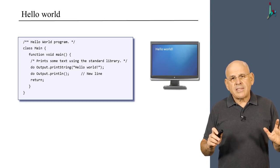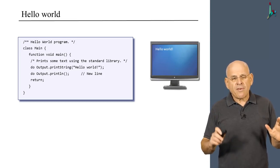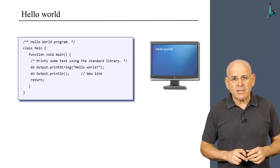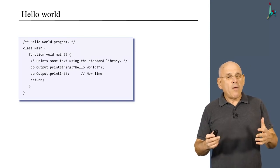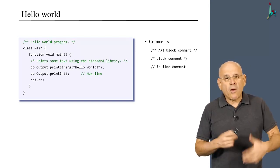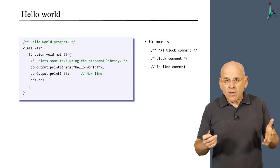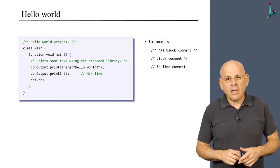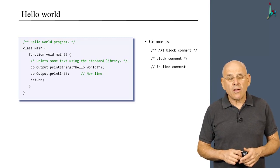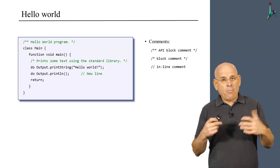But for now, what I'd like to observe is that in Jack, we have three kinds of comments. We have API comments, which can be processed by some external tool, like Javadoc. I mean, we could have written a similar JackDoc tool. We have block comments, which are delimited by these two delimiters.